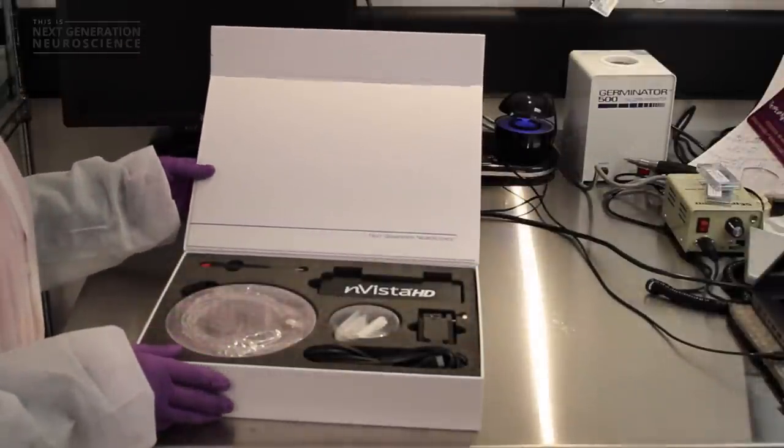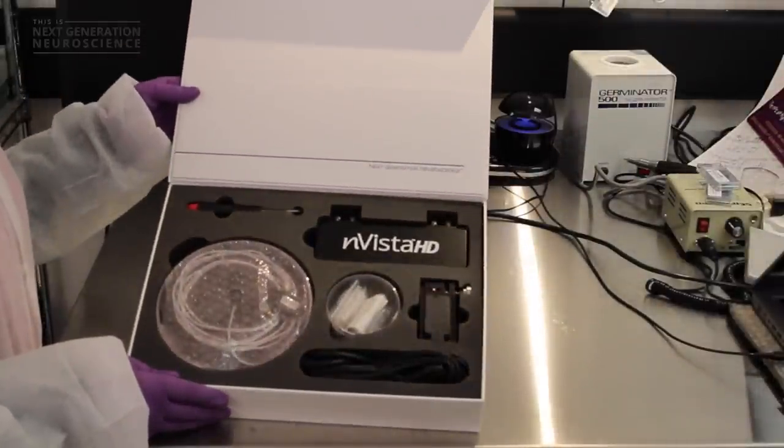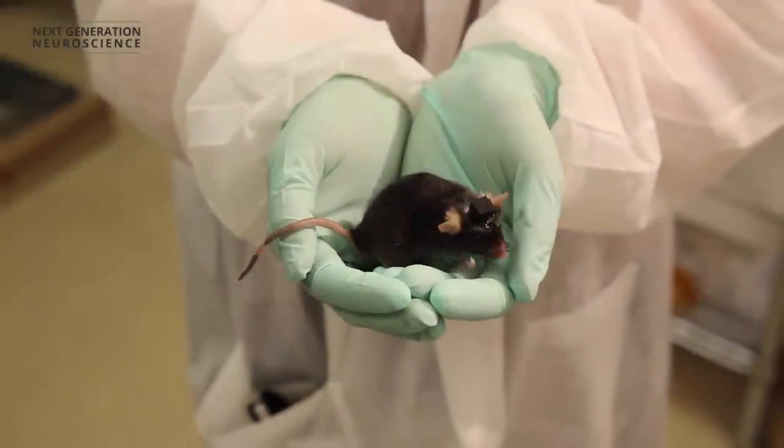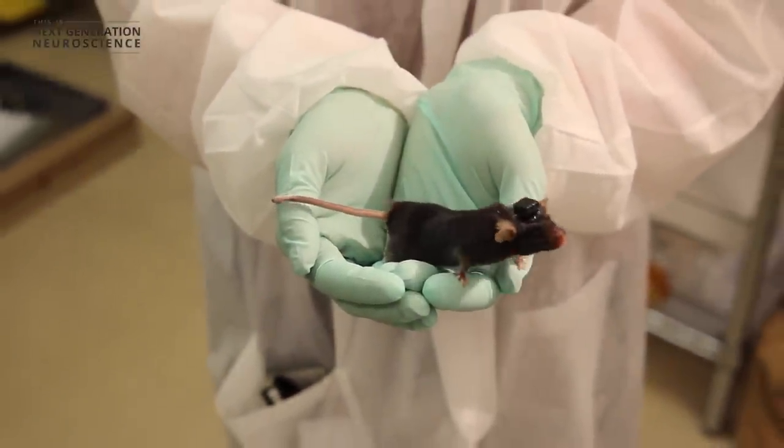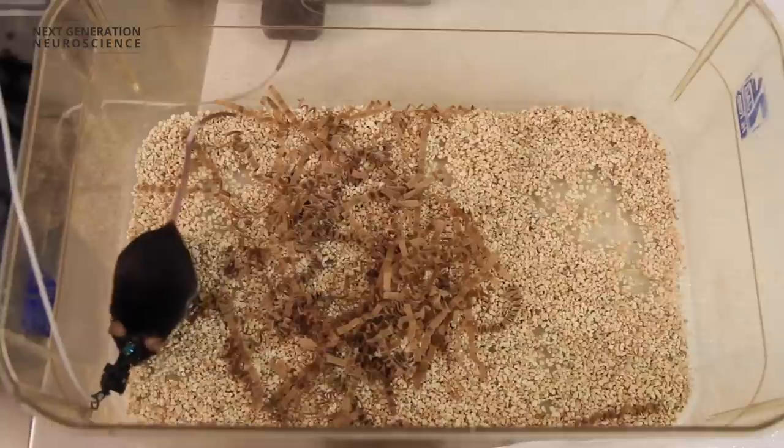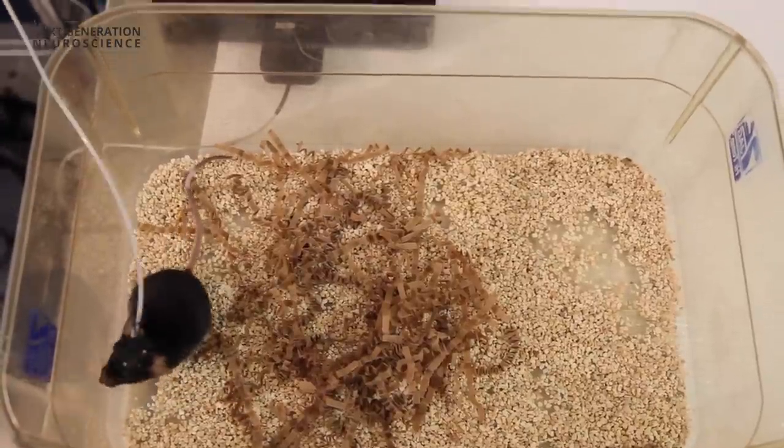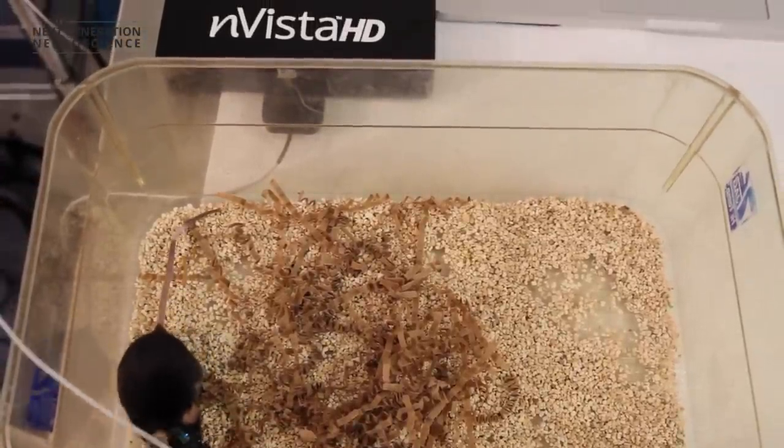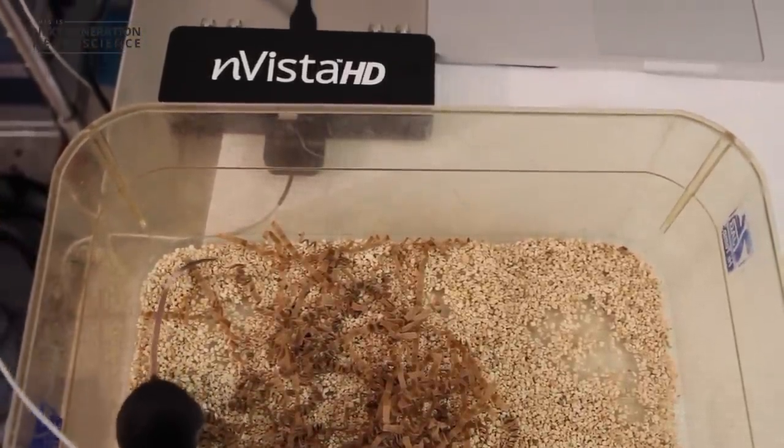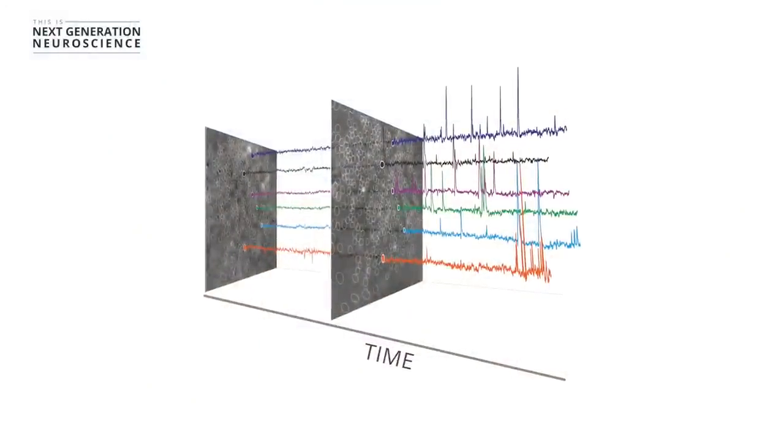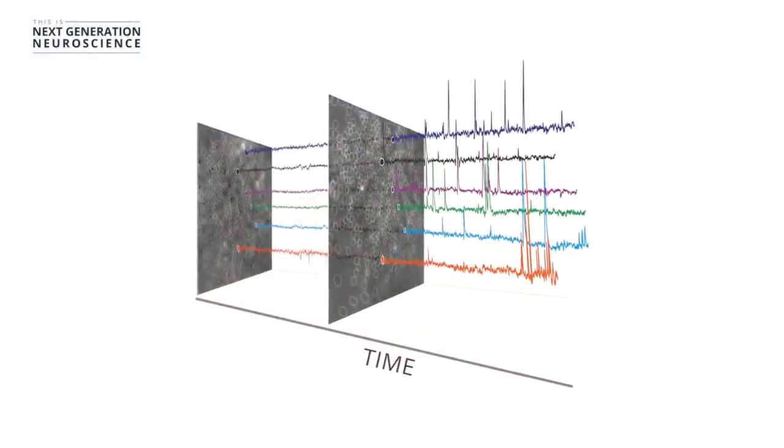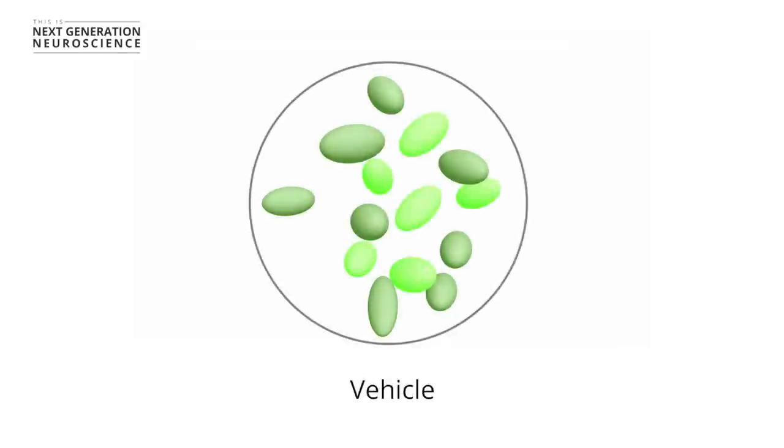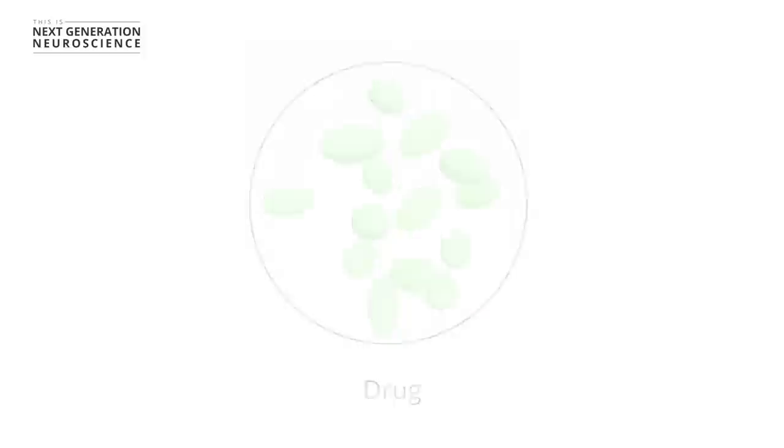Recording in the brain of awake and behaving animals is really unprecedented. One of the other major advantages is that the technology potentially allows you to record activity patterns from the same neurons over multiple recording sessions, days to weeks to months. That's going to be really important for tracking how neuronal activity dynamics change over the course of a drug treatment or some sort of long-term exposure.